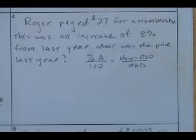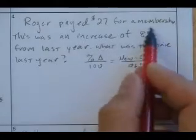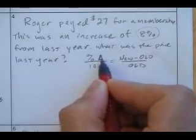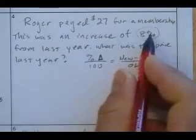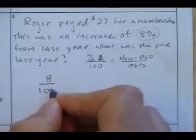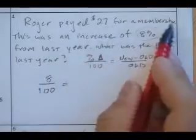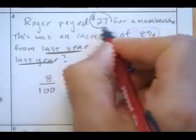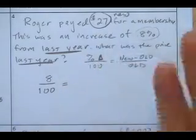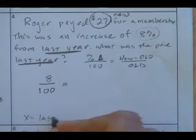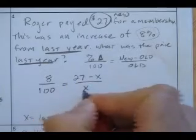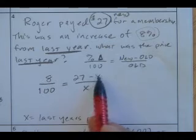Roger paid $27 for a membership. This was an increase of 8% from last year. What was the price last year? We know the percent change was a positive 8% — we use delta to represent change. So: 8 over 100 equals new minus old over old. Last year is the old, which we don't know. Roger paid $27 this year, so new minus old is 27 minus x, all over x.